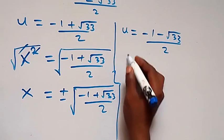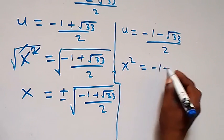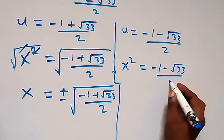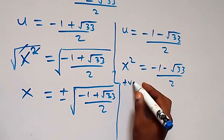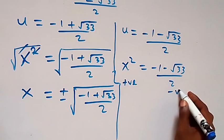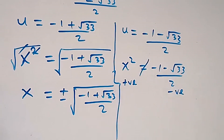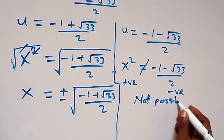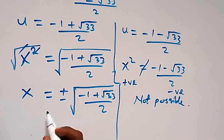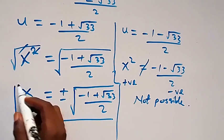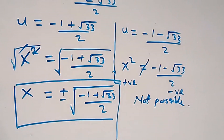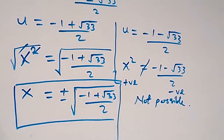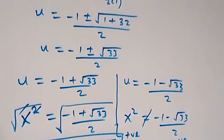On the other side, x squared equals minus 1 minus root 33 over 2. This should be a positive number, but here we have a negative number, so a positive number cannot equal a negative — this is not possible. Therefore the values of x in this problem are x equals plus or minus square root of minus 1 plus root 33 over 2. We've come to the end of this class. Thank you for watching. Don't forget to subscribe for more exciting videos, turn on the notification bell, share this video, give it a thumbs up, and see you next class. Bye for now.